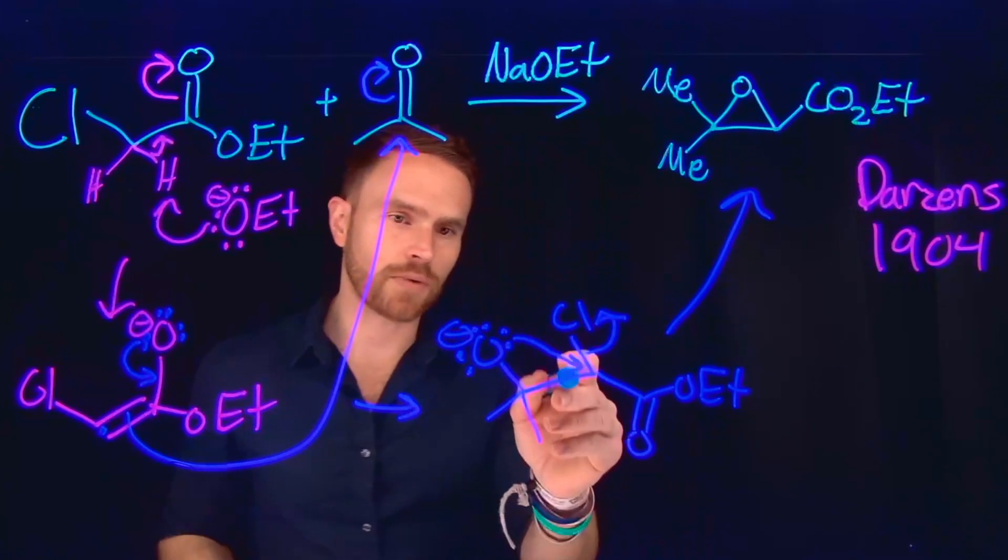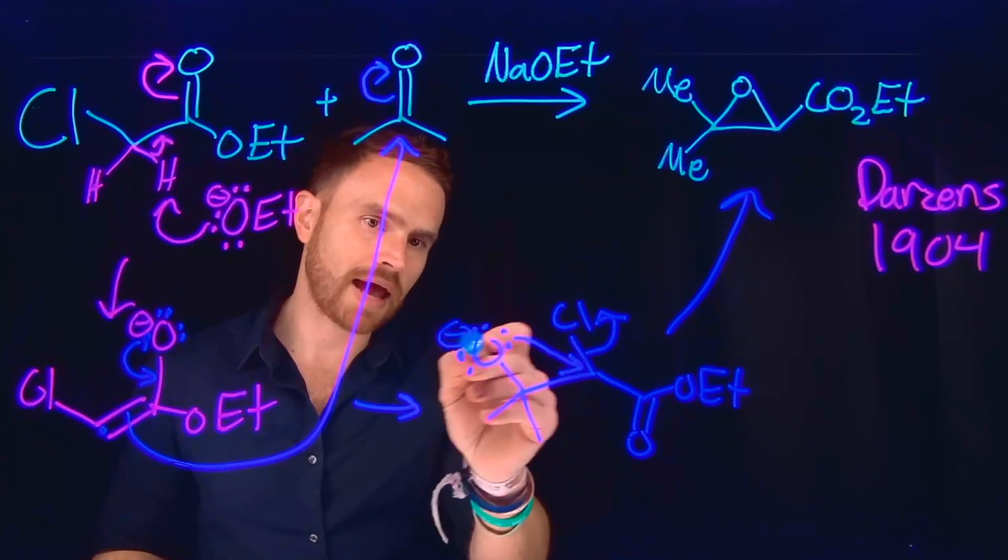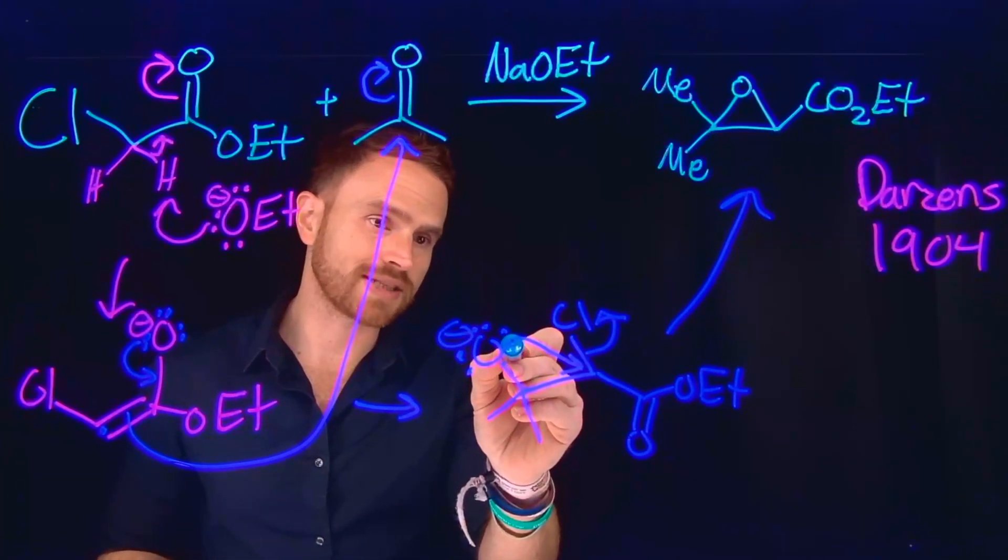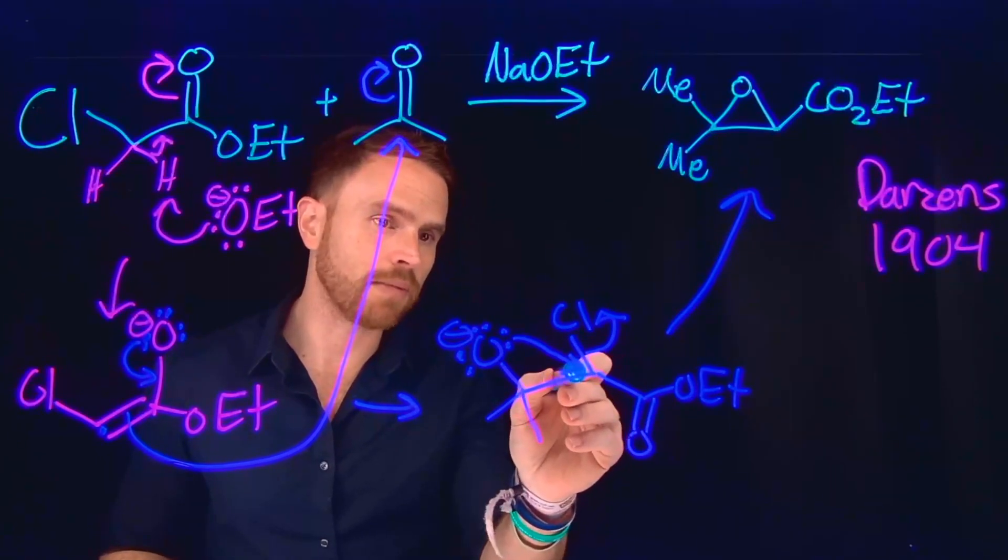And this is going to allow us to generate this intermediate which is going to have a negatively charged oxygen which will attack the adjacent carbon atom and kick off our good leaving group in this chloride.